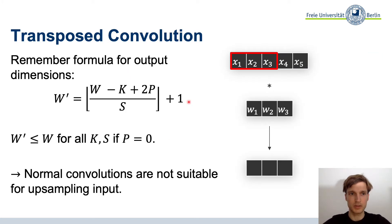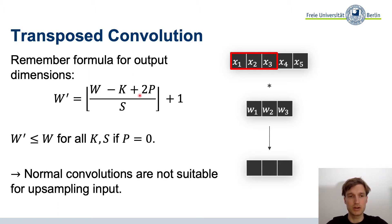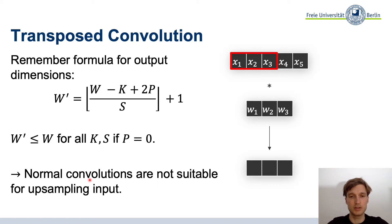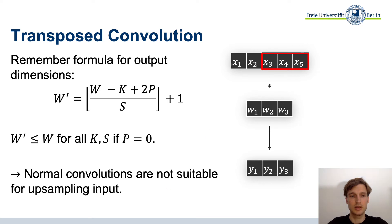First, let's talk about convolutions. Remember the formula for output dimensions: W' = floor((W − kernel + 2×padding) / stride) + 1. We see that W' is always smaller than or equal to W — so we can only use normal convolutions to downsample, not upsample. For transposed convolutions, instead of applying the kernel across all inputs at once, we apply the whole kernel to just one input element — for example X_1 — and get three outputs. So for convolutions: three inputs with kernel size 3 gives one output; for transposed convolutions: one input with kernel size 3 gives three outputs.